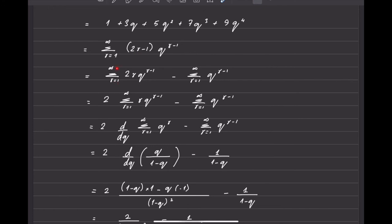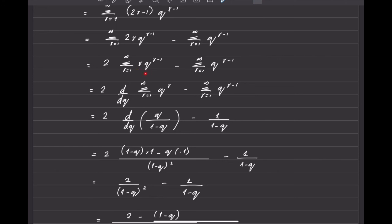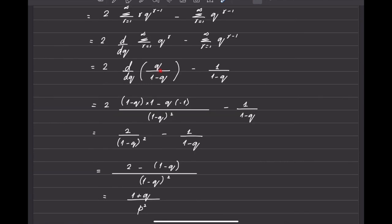The two series are: summation from r equals 1 to infinity of 2r times q^(r-1), minus the summation from r equals 1 to infinity of q^(r-1). From the first series I take 2 common. The terms r times q^(r-1) are again the differential of q^r, so I write it as 2 times d/dq of the summation of q^r. Both summations of q^r and q^(r-1) are geometric series, so I apply the geometric series formula to both.